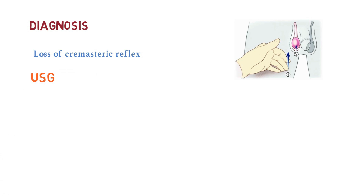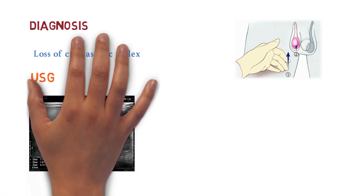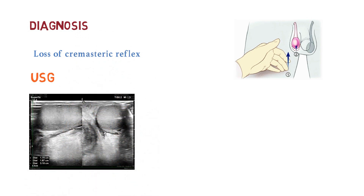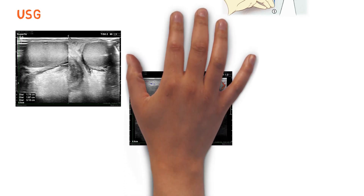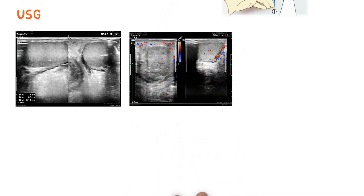The patient was referred to the radiology department for ultrasonographic studies. Looking at the left testis, it appears normal with homogeneous echotexture. However, the right testis appears heterogeneous and hypoechoic, which is abnormal.